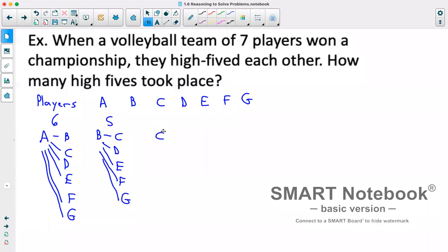Player C has already high-fived player A and B, so we can't count them. So they have high-fived D, E, F, and G. Now we're on to player D. They've already high-fived A as well as B and C. So the new high-fives should be to E, F, and G. So they have three total.